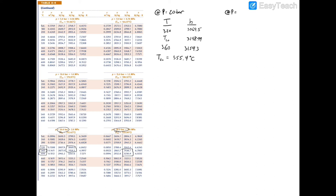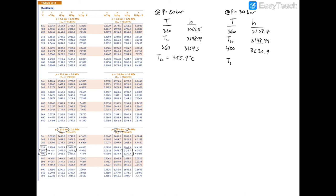At P = 30 bar, h = 3148.99 kJ/kg falls between 360°C (h = 3138.7 kJ/kg) and 400°C (h = 3230.9 kJ/kg). Interpolating gives T at 30 bar = 364.46°C.